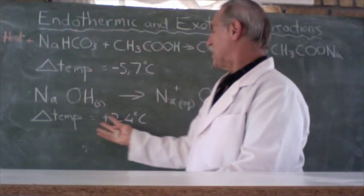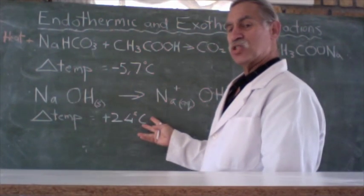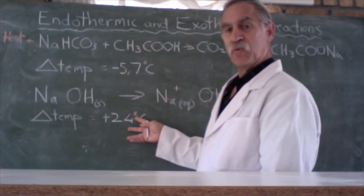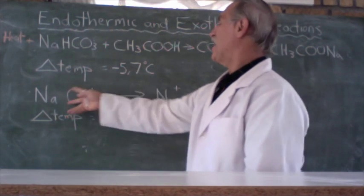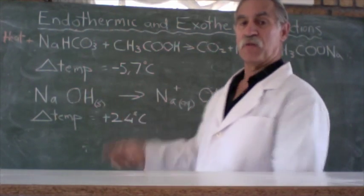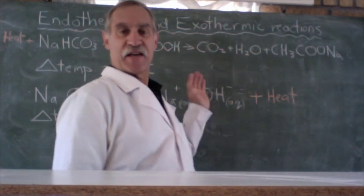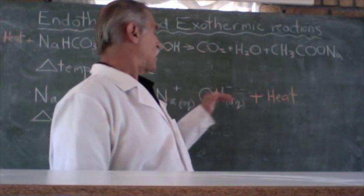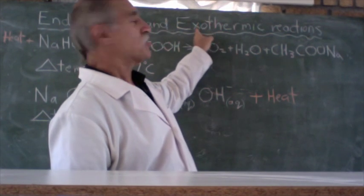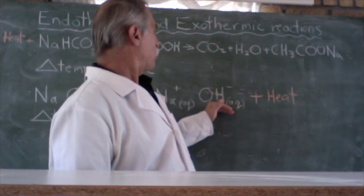Now in this case the temperature increased, so heat must have come from somewhere to go into the thermometer. Where did it come from? It came from the reaction, came out of the reaction and into the thermometer. So heat can be considered almost as a product of the reaction. Heat out, and therefore we say exothermic: heat out. So here we have an exothermic reaction and here we have an endothermic reaction.